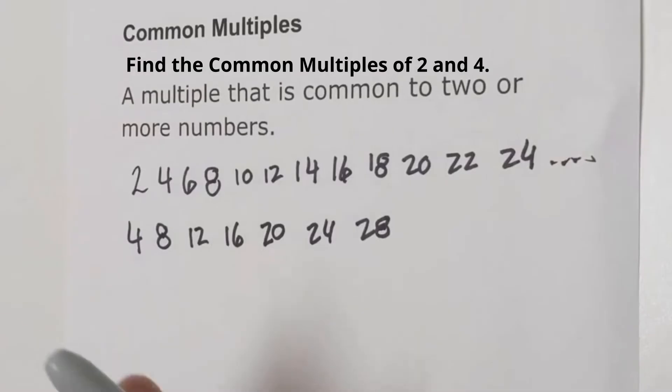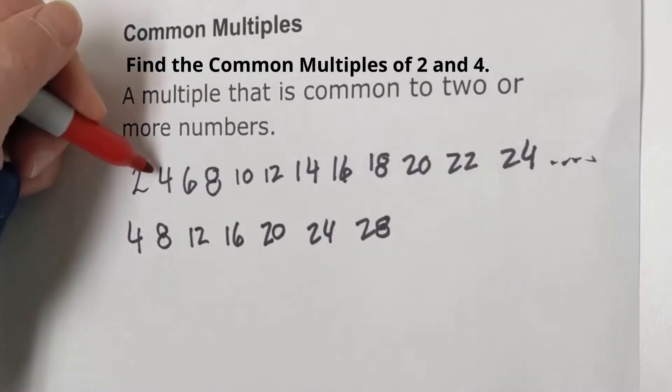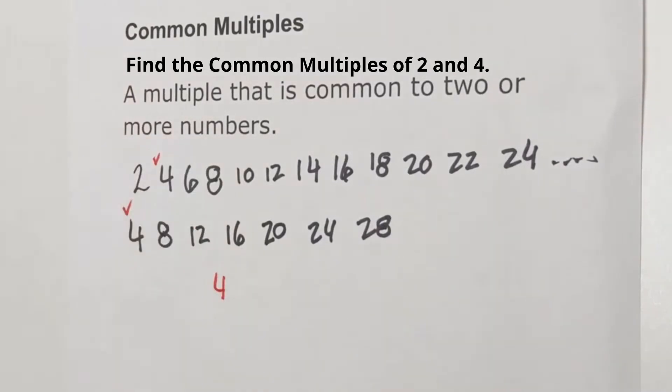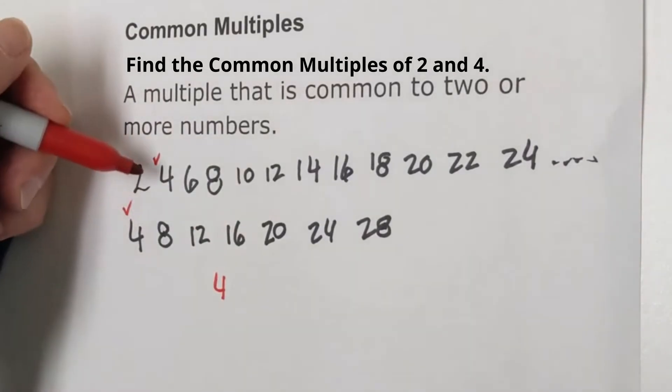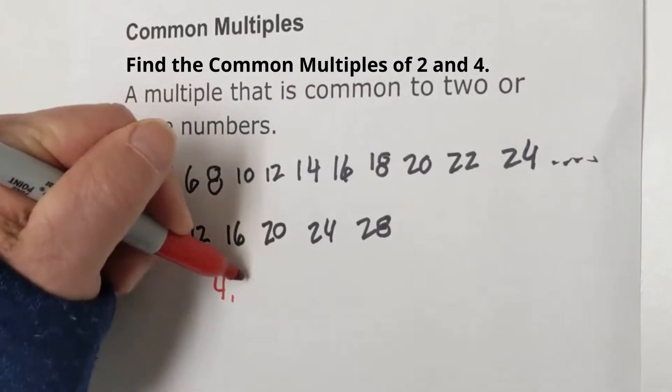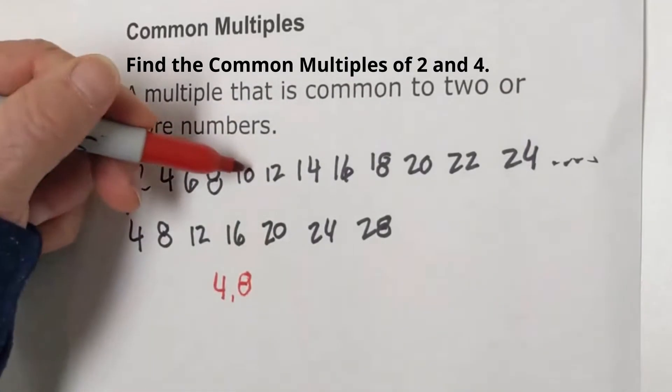So in this example we have four and four—it's common. And then we don't have a six, but we have an eight. We don't have a ten, but we have a twelve.